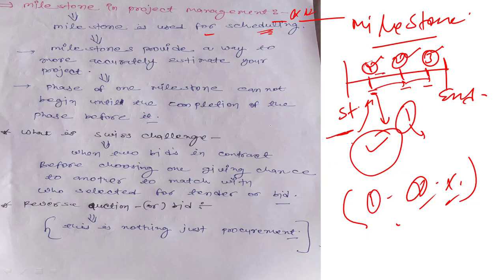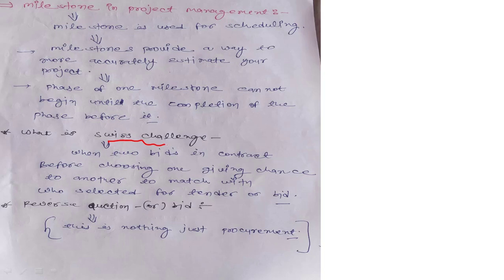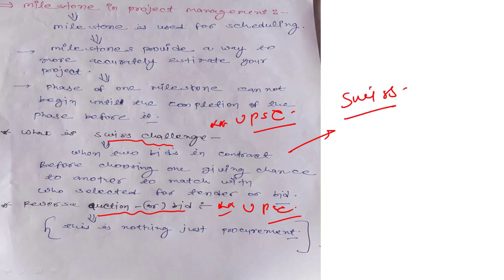Milestone is a management technique where a big project is divided into small parts. If any institute or company uses project management techniques like milestones, they save money, utilize resources more efficiently, and take less time. That is why project management is introduced at higher levels. Next, two very important terms from research: Swiss Challenge and Reverse Bid — both are important for UPSC.